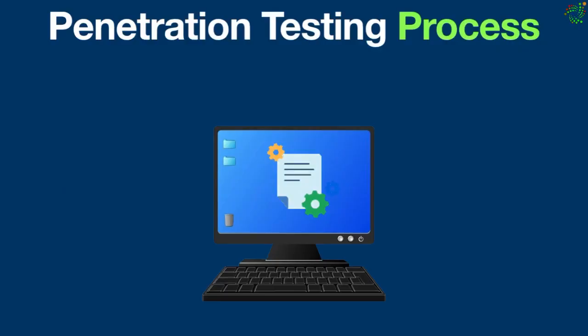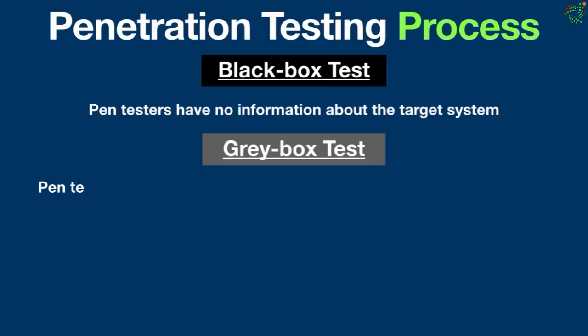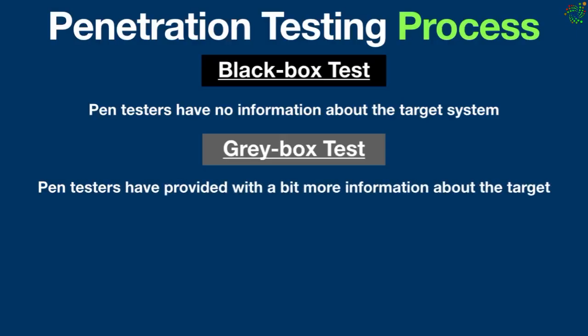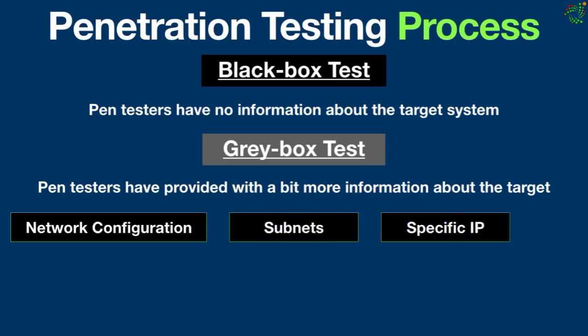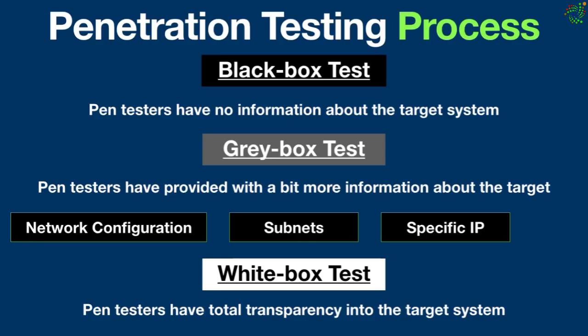The penetration testing process also considers how much information pen testers have ahead of time. In a black box test, pen testers have no information about the target system and must rely on their own research to develop an attack plan, just as a real-world hacker would. In a grey box test, pen testers are provided with some information about the target system, such as network configurations, subnets, or a specific IP to test, giving the attacker a basic idea of the machine. In a white box test, pen testers have total transparency into the target system, with full access — more in depth than black box testing — and it is used to find potential threats due to bad programming, misconfigurations, or lack of any defensive measures.